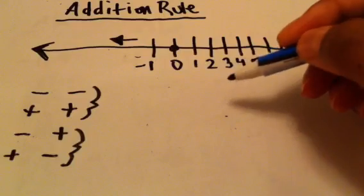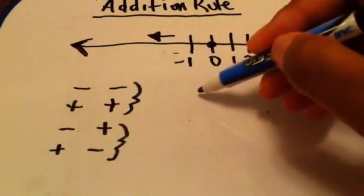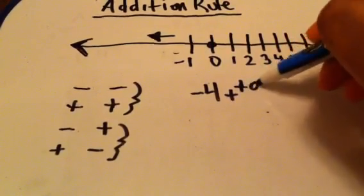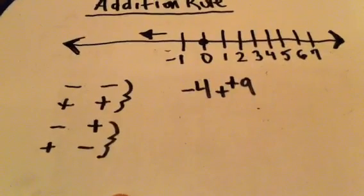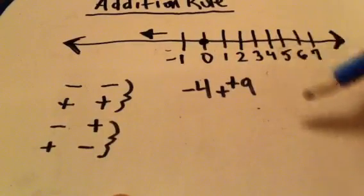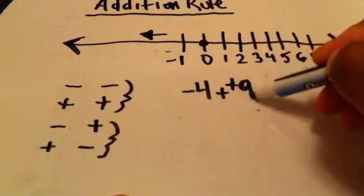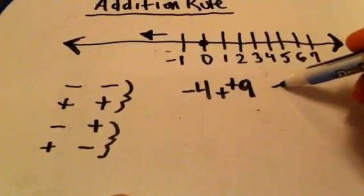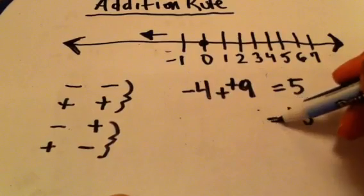Let's practice adding negative and positive numbers with different signs. How about negative 4 plus positive 9, which is the same thing as negative 4 plus 9. When you're dealing with adding numbers that have different signs, you subtract the smaller number from the larger number, and your final answer will have the sign of the larger number. So 9 minus 4 is 5, and since our 9 is positive, our final answer is positive 5.